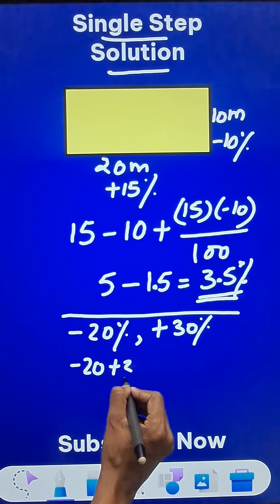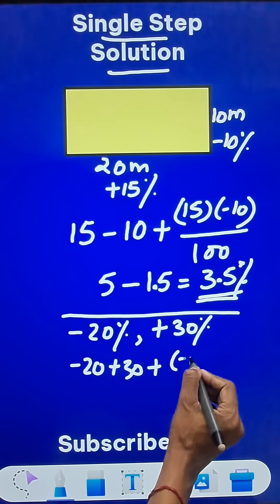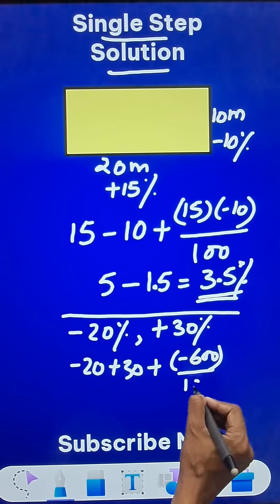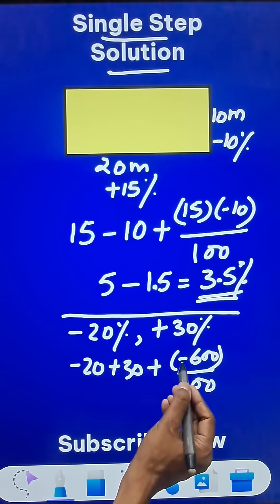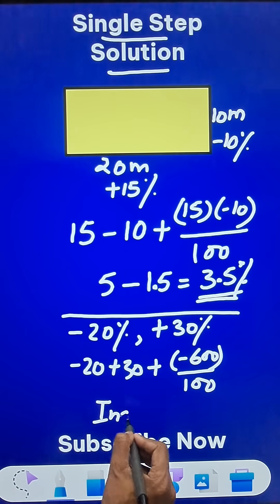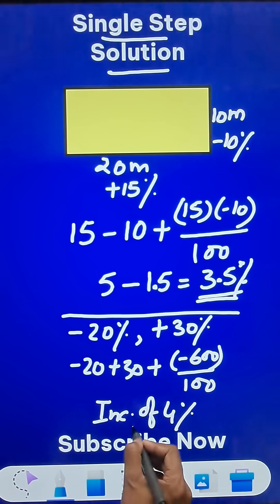Minus 20 plus 30 plus the product of these two is minus 600 upon 100 and you will find that this is 10 minus 6. So there will be an increase of 4% in the area.